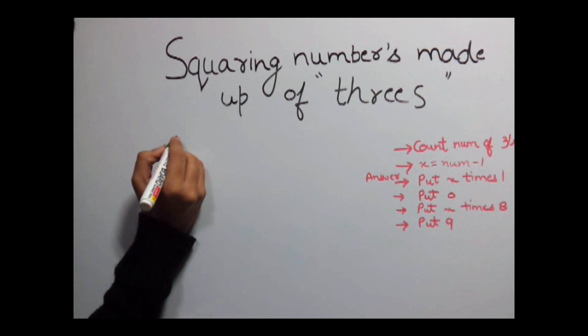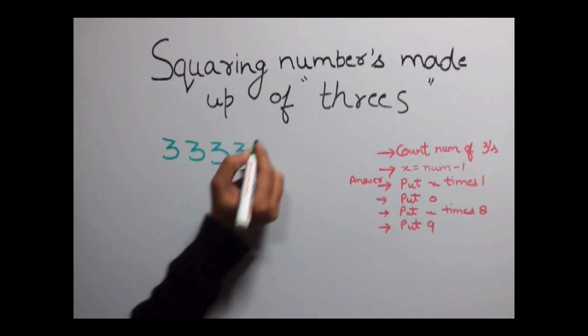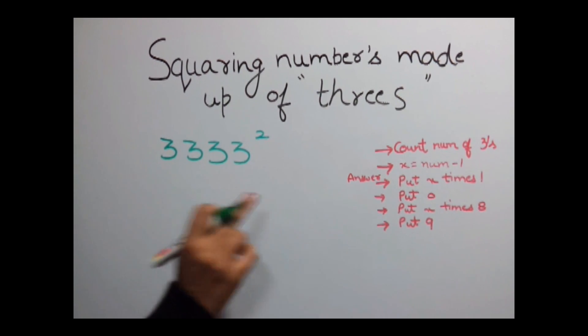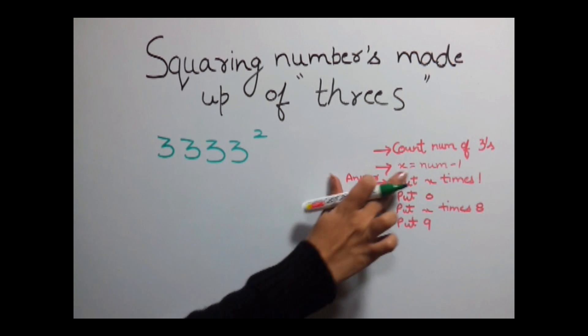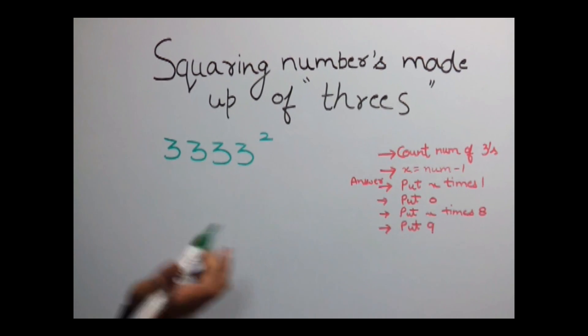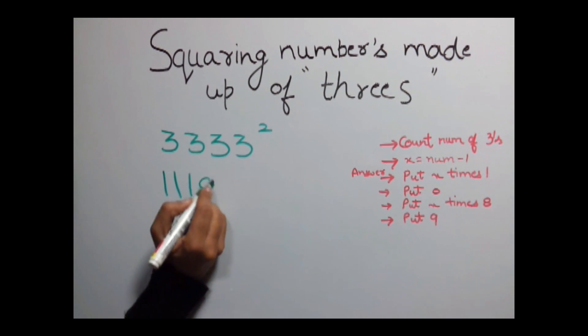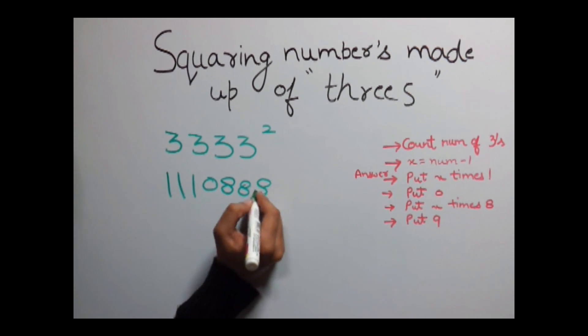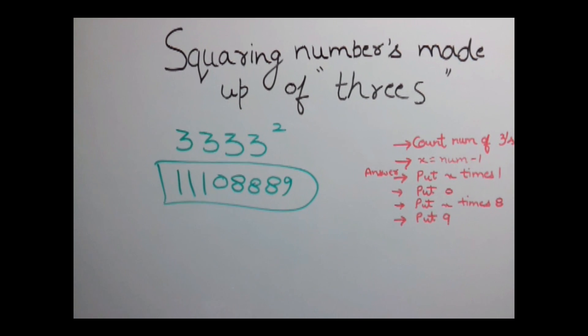Let's do this. I'll take the previous example only. Find out the square of this number. So what you need to do here number of 3's are 4. So x would be 3. The value of x would be 3 over here. So you need to put 1 3 times. Now put a single 0. Again put 3 times 8 and then put a 9 and this is the answer.